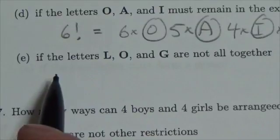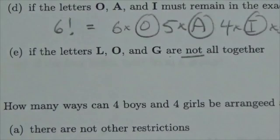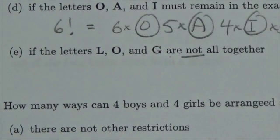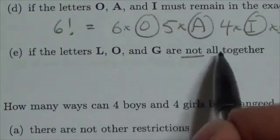In this question, we're told that the letters L, O and G are not all together. Now, the implication is that you could have a couple of them together. You could have L, O together, or L, G, or O, G together, and then order. You could play with the order there, but they're not all together.